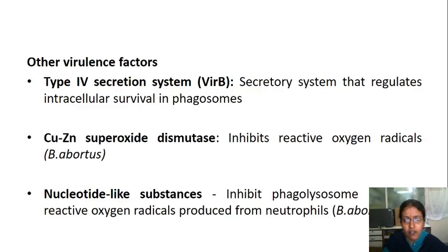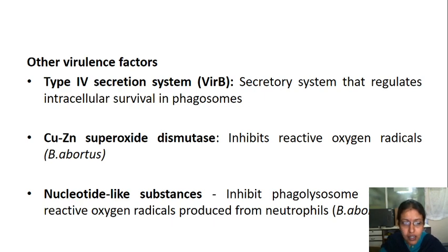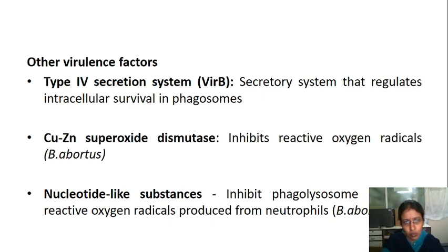Apart from lipopolysaccharide antigens and the Type 4 Secretion System, other virulence factors include copper-zinc superoxide dismutase and nucleotide-like substances. Copper-zinc superoxide dismutase inhibits reactive oxygen radicals, mostly in Brucella abortus. Nucleotide-like substances inhibit phagolysosome fusion and reactive oxygen radicals produced by neutrophils, also primarily in Brucella abortus.